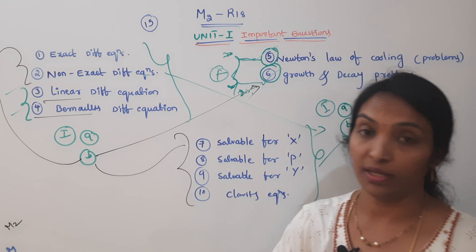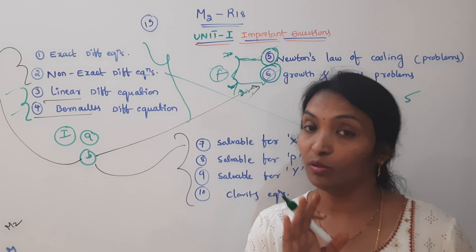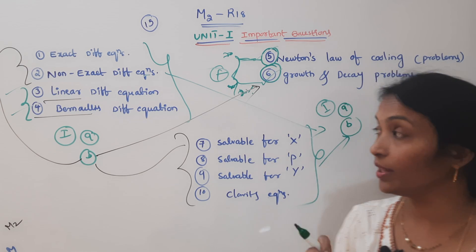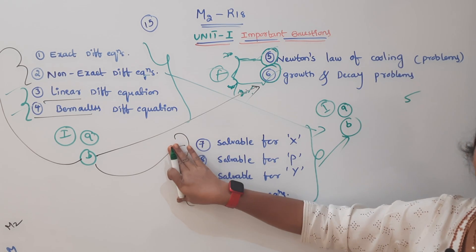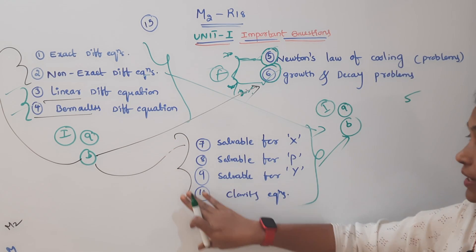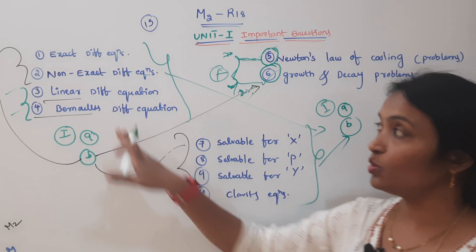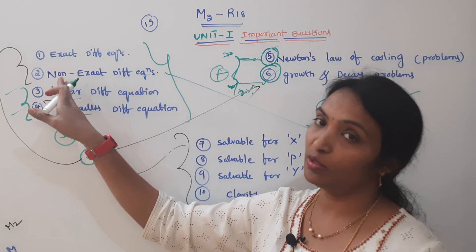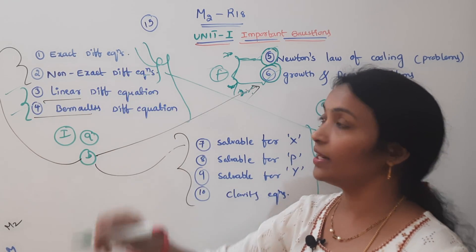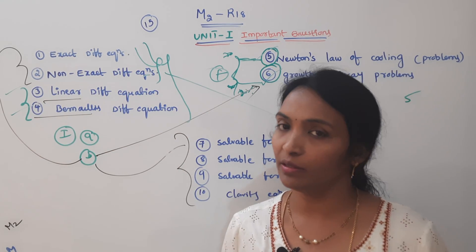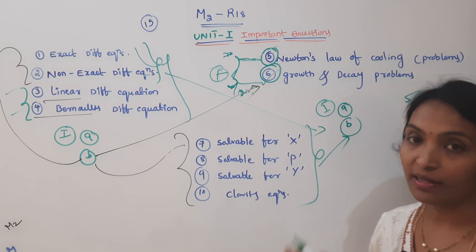If it is COVID, it will be done with 10 marks. If it is non-COVID, it will be 5 marks. It will be solvable for x, y, p — or non-exact. If it is non-exact, it will be in the long questions.